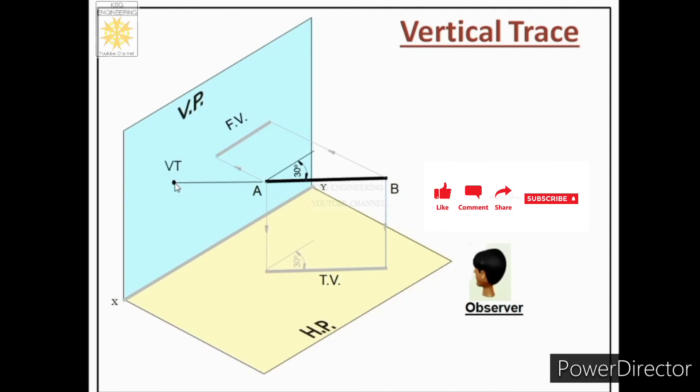That intersection will be called as vertical trace of the line. We can say the point at which line meets the VP is called the vertical trace.